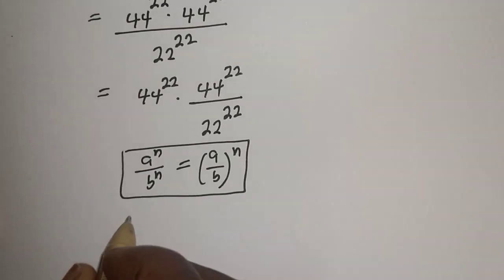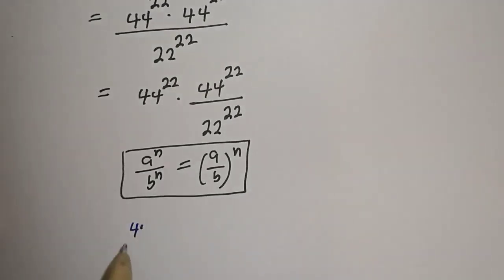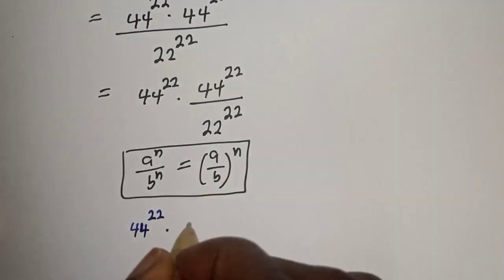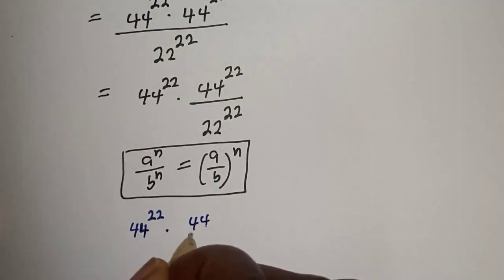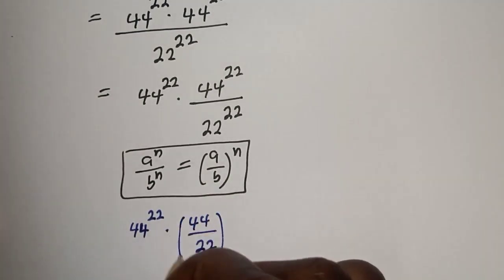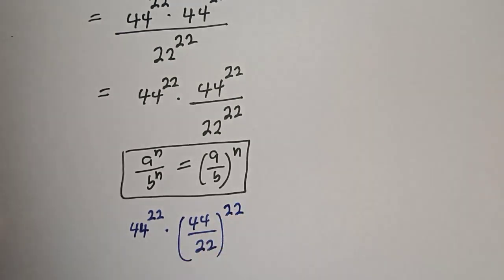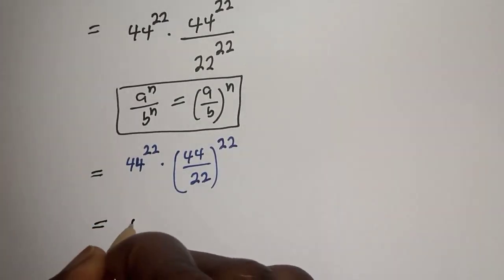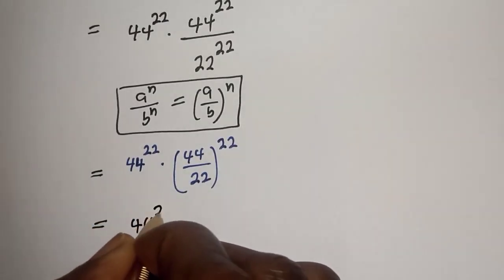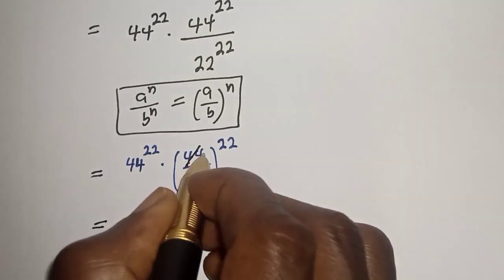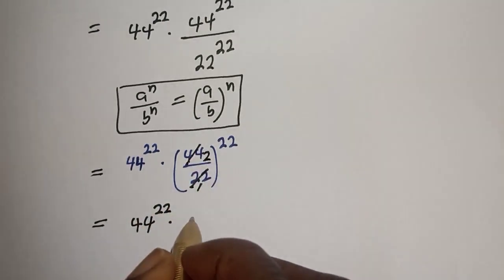This gives us 44 raised to power 22 multiplied by 44 over 22 raised to power 22, which equals 44 raised to power 22 multiplied by 2 raised to power 22.